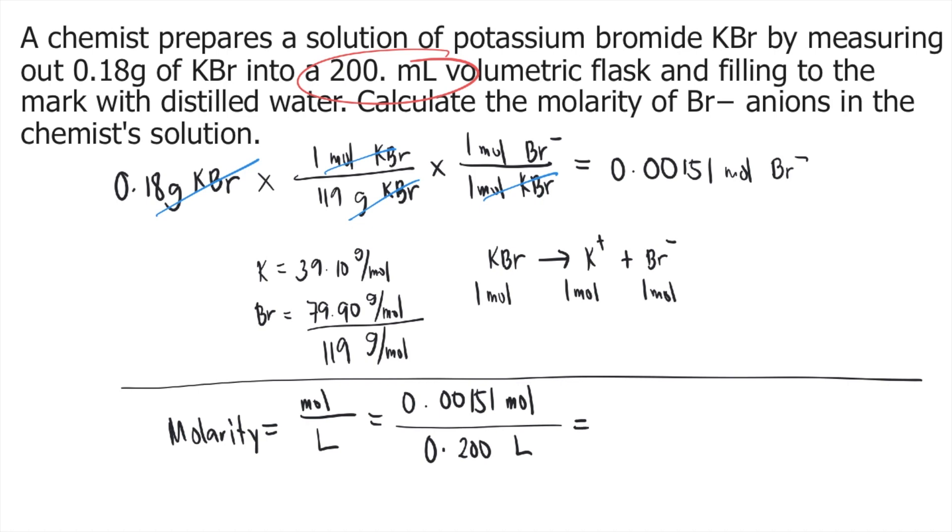Now grab your calculator and solve this: 0.00151 divided by 0.200, which equals 0.00755 moles per liter, or you can express the unit as 0.00755 molar, or M. So the answer to this question is 0.00755 molar.